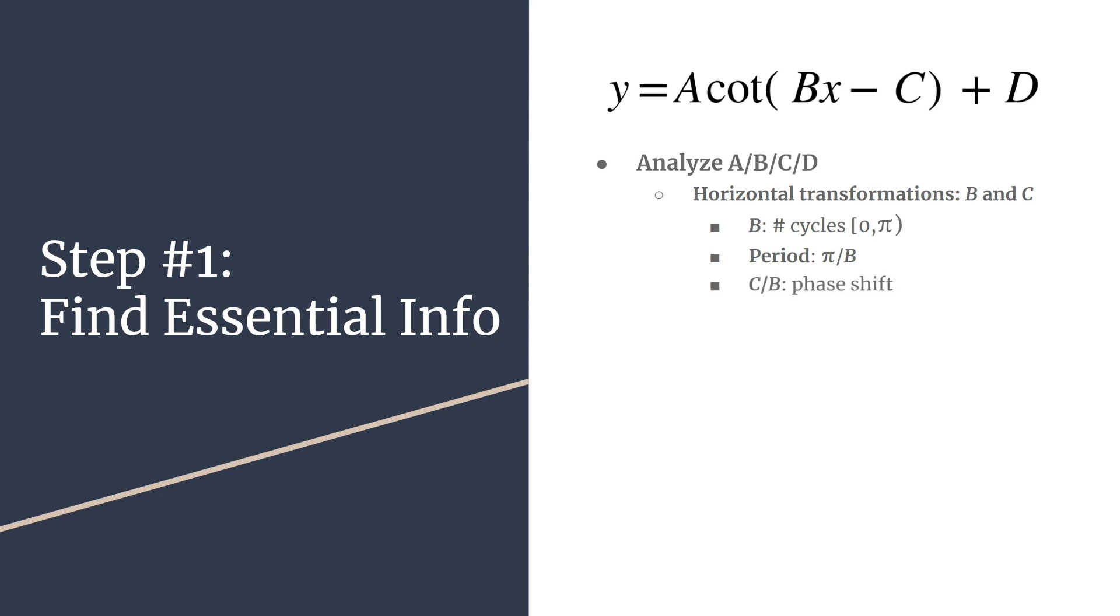C divided by B will give you your phase shift or your horizontal shift. And then we also will be able to find the asymptotes, and we'll talk about a quick trick to get the equation for the asymptotes in just a minute.